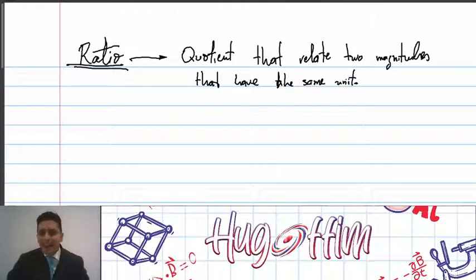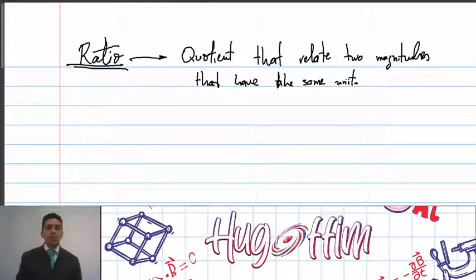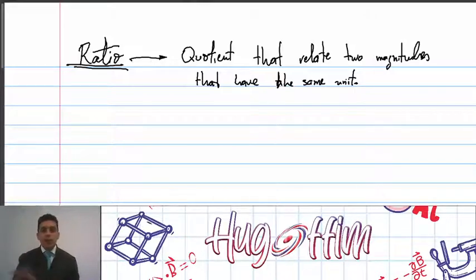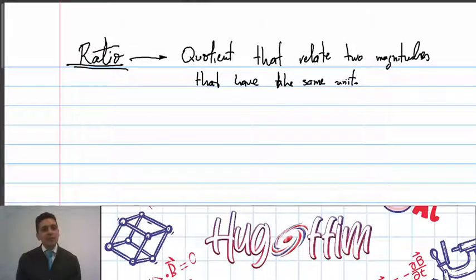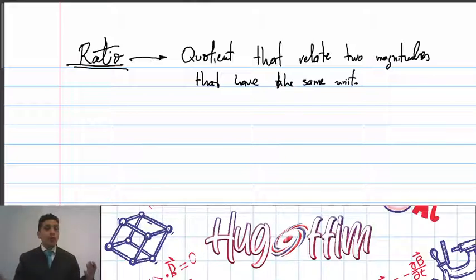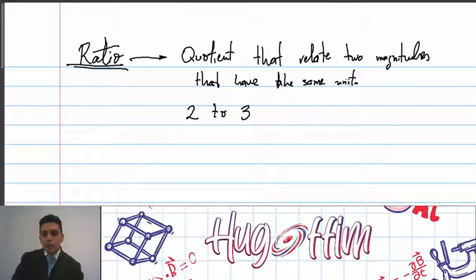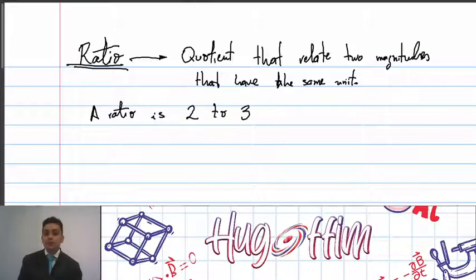Ratios are highly used in science when people organize speeds, frequencies, or masses. In science, information is often related to one constant — for example, speed is often related to the speed of light, so you can use a ratio to say a velocity is 2 to 3 of the speed of light. The way to represent that ratio would be 2 to 3.